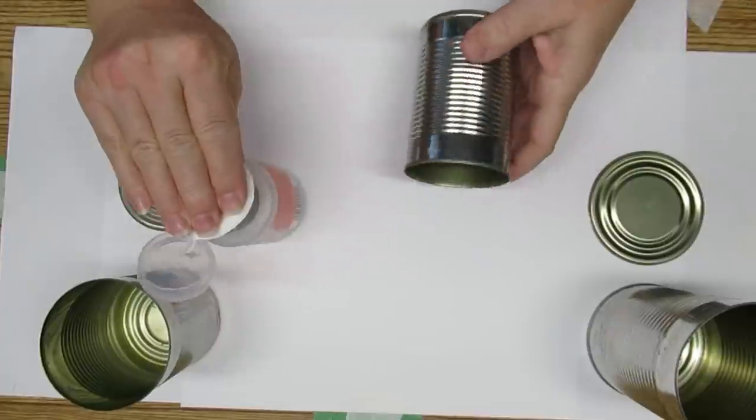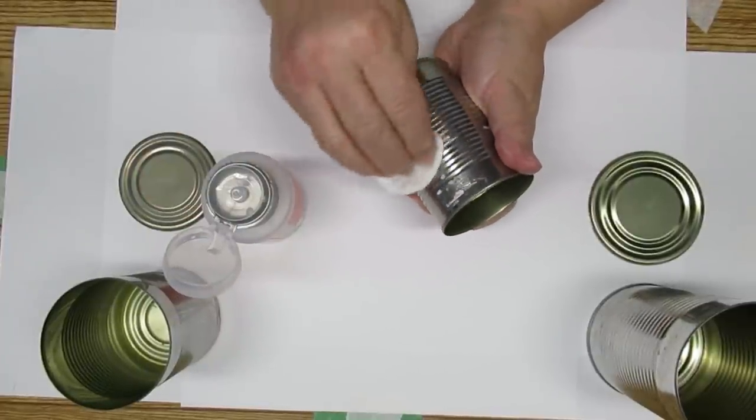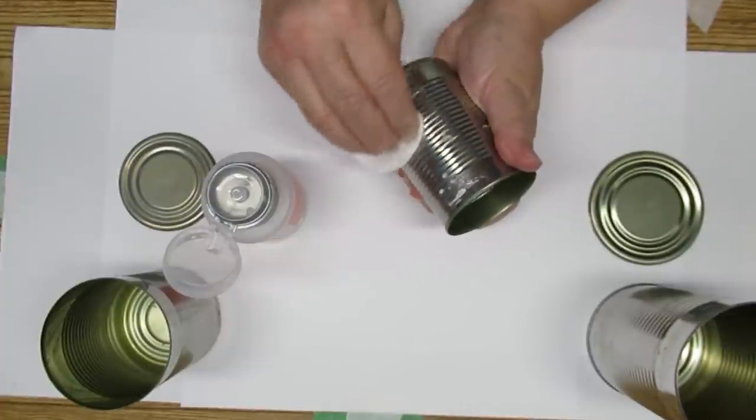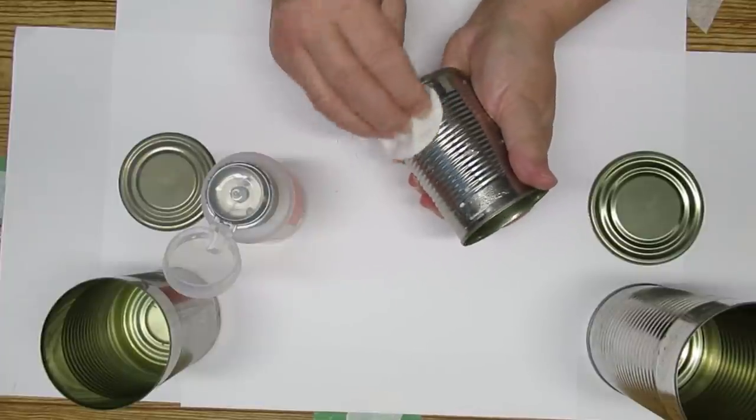The first thing I'm going to do is take some 100% acetone and a cotton round and just work on getting the rest of that glue off because I'm going to be painting these and I don't want all of that texture to show.